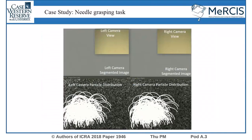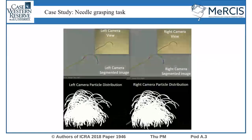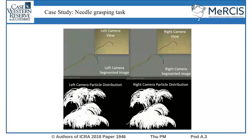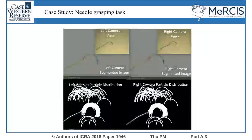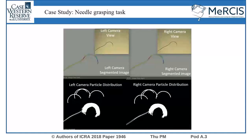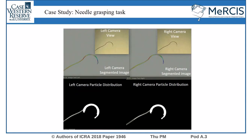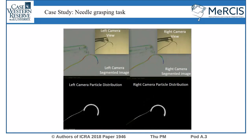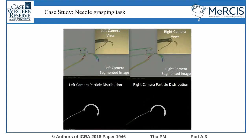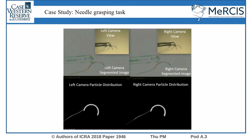As a case study, we performed an automated needle grasping task. The needle is randomly inserted into the endoscopic view. The particle filter algorithm detects the needle in the workspace, and once it converges to a solution, the needle location is sent to the robot for grasping.